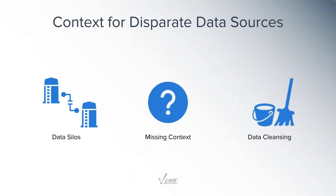The first example I want to talk through is providing context for disparate data sources. Digital transformation initiatives require access to manufacturing data, which comes with a handful of challenges. The first challenge is getting access to that data. Data often exists in what we tend to call data silos, which are various systems that are disconnected from each other.